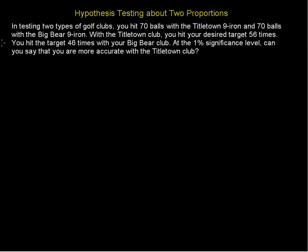In this video we'll walk through an example of a hypothesis test about two proportions. In testing two types of golf clubs, you hit 70 balls with the Titletown 9-iron and 70 balls with the Big Bear 9-iron. With the Titletown club you hit your desired target 56 times, and you hit the target 46 times with your Big Bear club. At the 1% significance level, can you say that you are more accurate with the Titletown club?